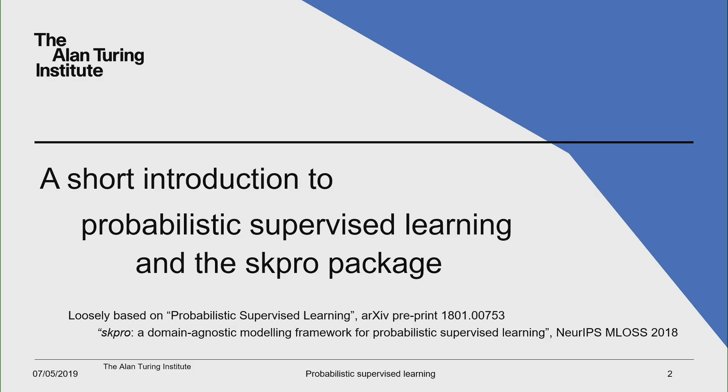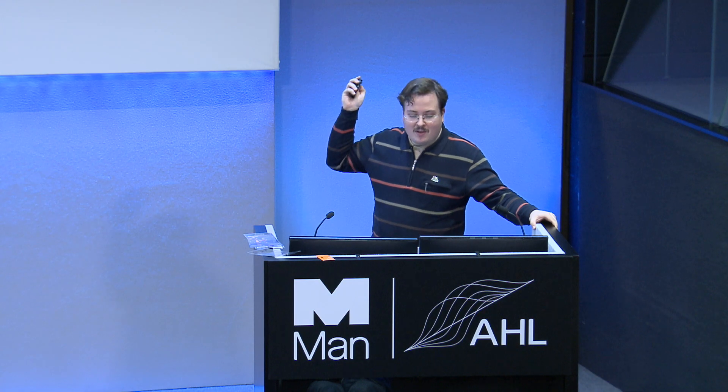So, references. There's a longer paper on the vision of probabilistic supervised learning, which has appeared in arXiv preprint and is still under review, it appeared last year. I've pushed a new version with some typos fixed, and there is one short paper that is exclusively about the package SKPro, which has appeared in the MLOS, the Machine Learning Open Source workshop at ECML last year.